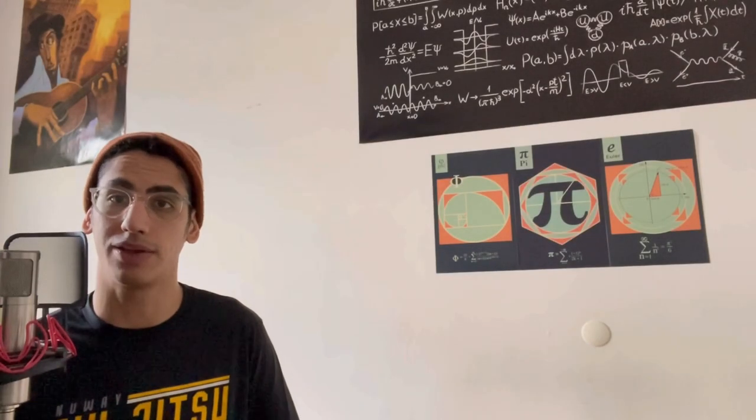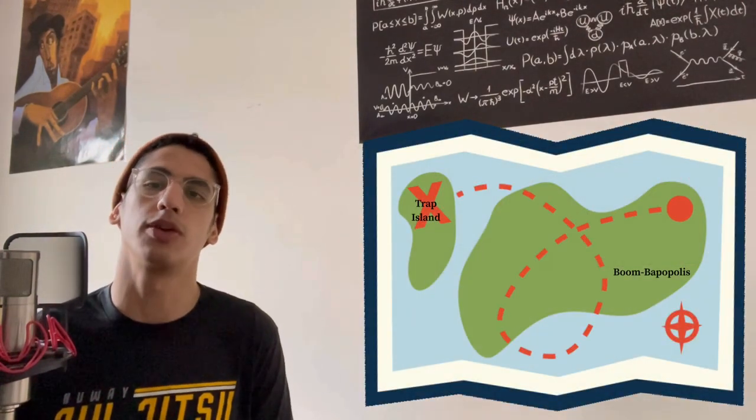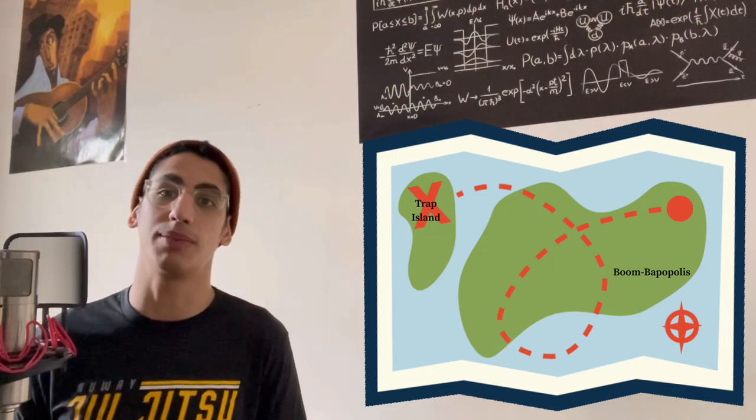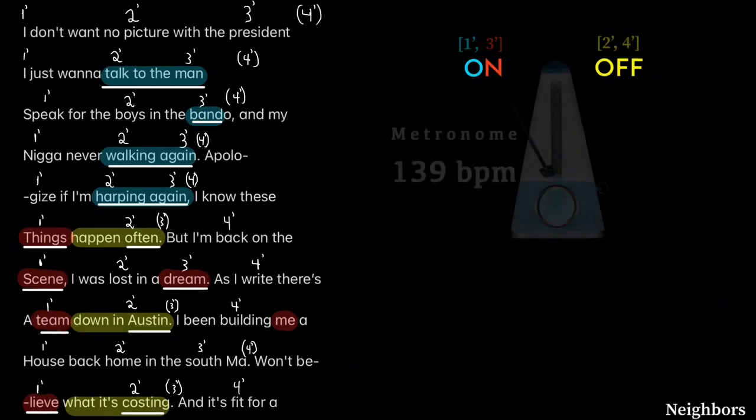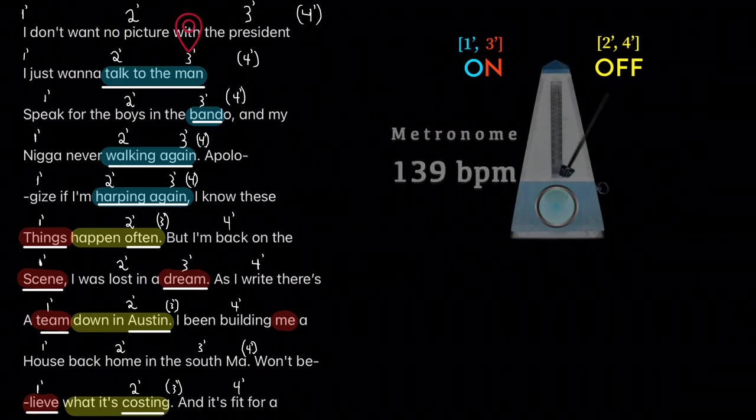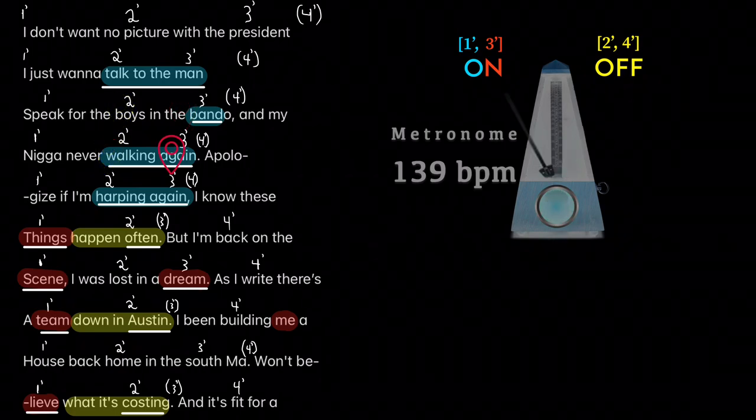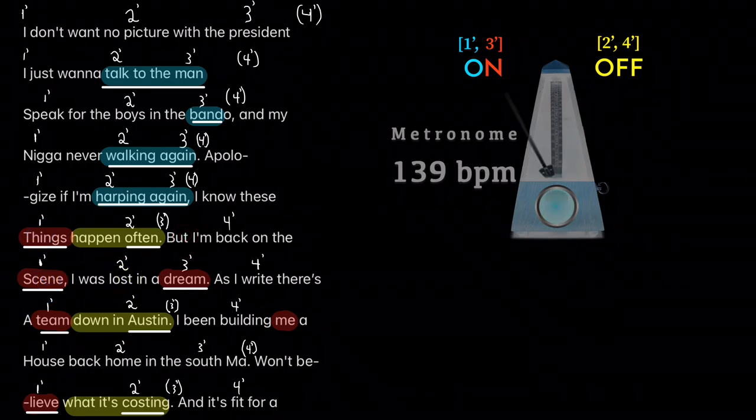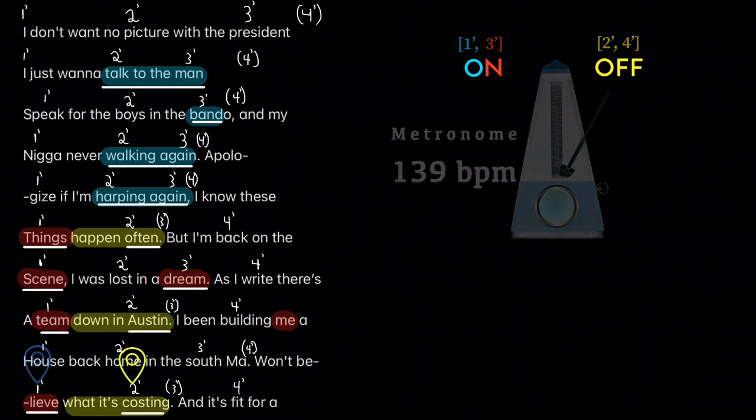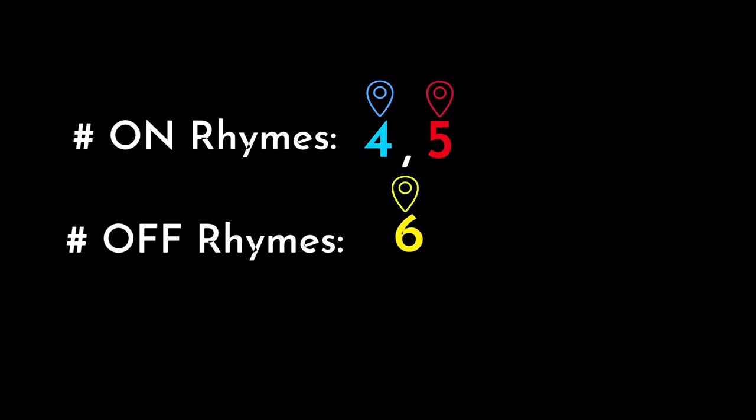And if we're able to switch between the two, we're going to have a substantial flexibility in terms of the number of beats that we'll be able to rhyme on. So let's look at this remarkable example from the soon to be GOAT, J. Cole. I don't want no picture with the president. I just want to talk to the man. Speak for the boys in a bando. And my nigga never walking again. Apologize if I'm hopping again. I know these things happen often. But I'm back on the scene. I was lost in a dream. As I write, it's a teen down in Austin. I've been building me a house back home in the south mind. Won't believe what it's costing. Now that's a very consistent flow in terms of having both on rhymes and off rhymes.